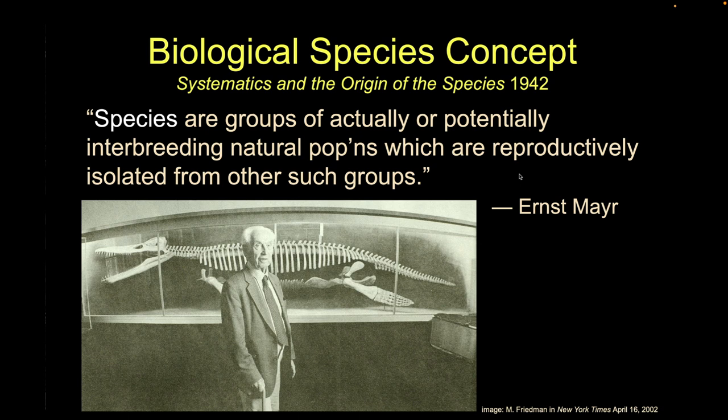The biological species concept — the one in your textbook that most people think of as the definition of a species — came from Ernst Mayr, who studied birds, bones, and paleontology. He defines it as: 'species are groups of actually or potentially interbreeding natural populations which are reproductively isolated from other groups.' That's the classic definition you should definitely know. It works really well for birds, mammals — the warm fuzzies with big eyes, fur, feathers.